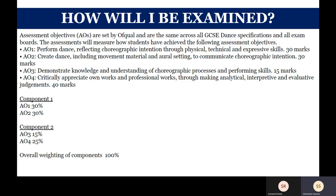Assessment objectives are set by Ofqual and are the same across all GCSE Dance specifications and exam boards. AO1 is to perform dance reflecting the choreographic intention through physical, technical and expressive skills. AO2 is to create dance including movement material and aural setting to communicate the choreographic intention. AO3 is to demonstrate knowledge and understanding of choreographic processes and performance skills. AO4 requires you to critically appreciate your own works and professional works using analytical, interpretive, and evaluative judgments.